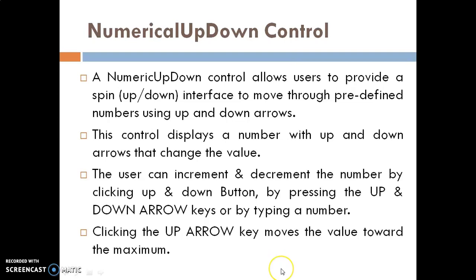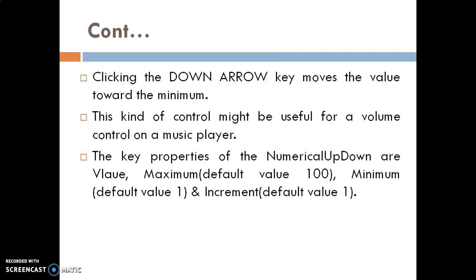The next control is the Numerical Up-Down control. A Numerical Up-Down control allows the user a spin up-and-down interface to move through predefined numbers using up and down arrows. It is the most common control of window form. This control does not support the text property. It displays a number with up and down arrows that change the value. The user can increment and decrement the number by clicking the up and down buttons, pressing the arrow keys, or by typing a number. The key properties are Value, Maximum, Minimum, and Increment.